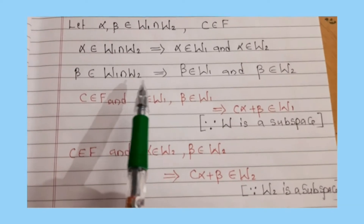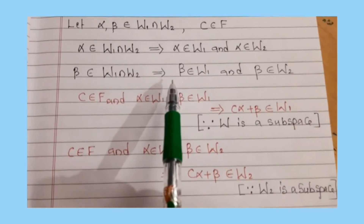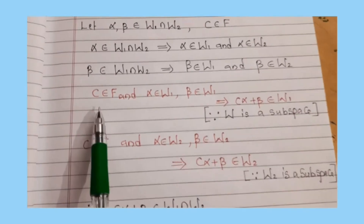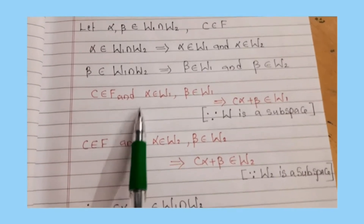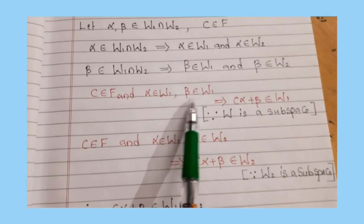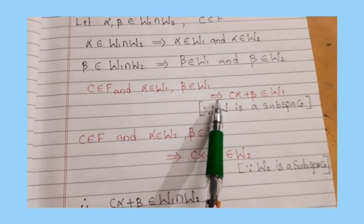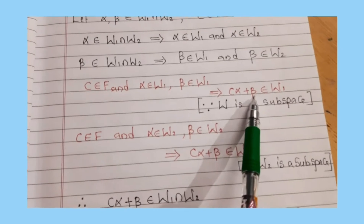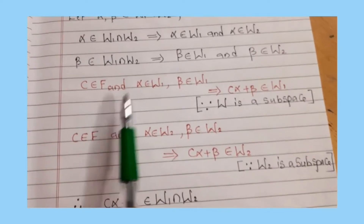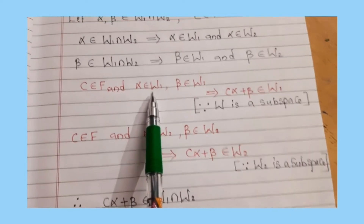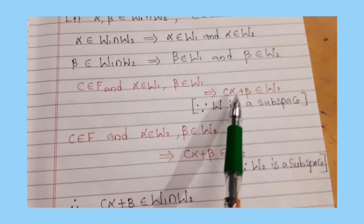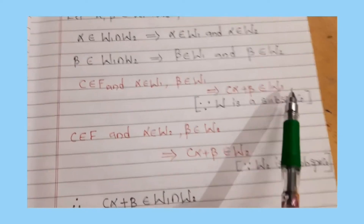Similarly, beta belongs to W1 intersection W2 implies beta belongs to W1 and beta belongs to W2. Now, c belongs to F and alpha, beta belong to W1, which implies c·alpha + beta belongs to W1.